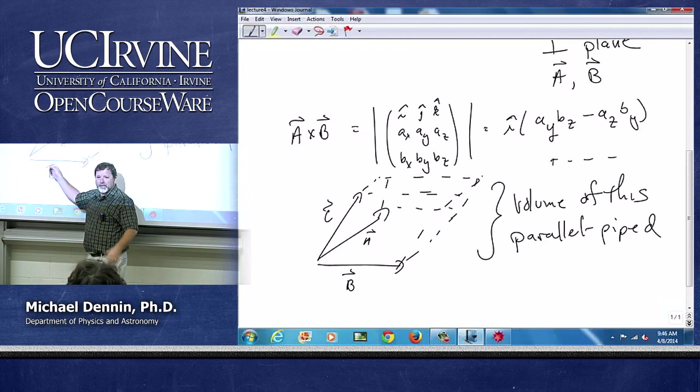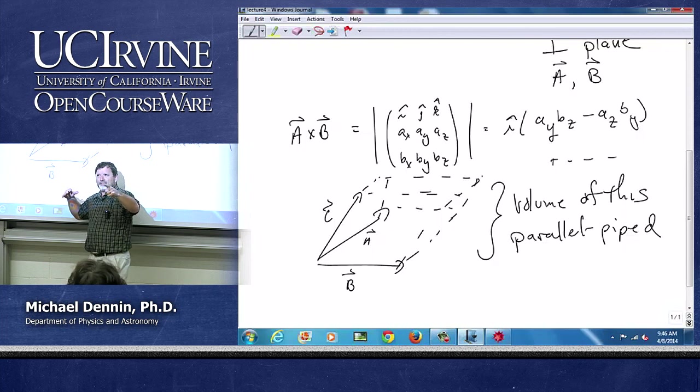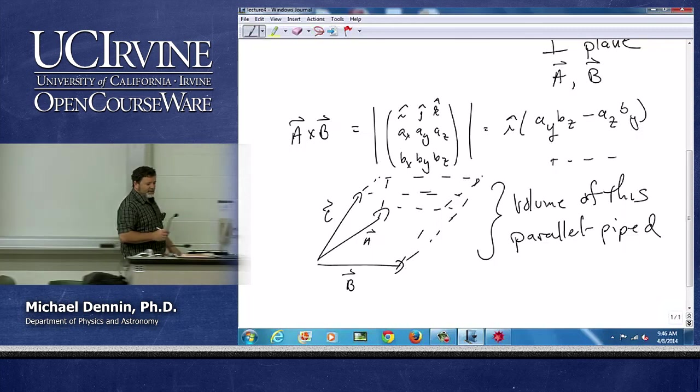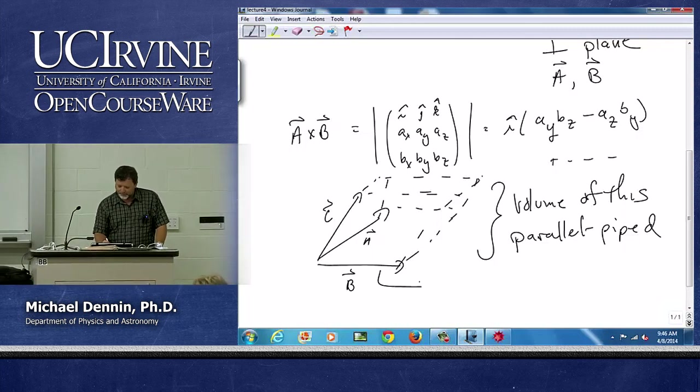You want a cross b, the whole thing dot c. Yours, I'd have to think about whether it worked doing a dot product first. I don't think it does. But basically, I compute this area. That's a cross b.